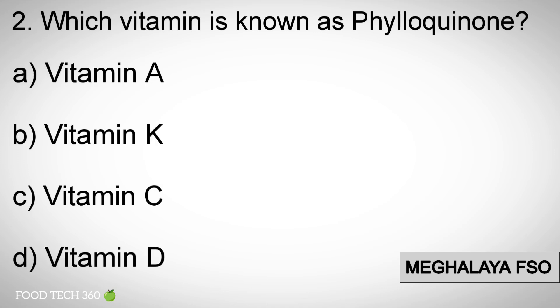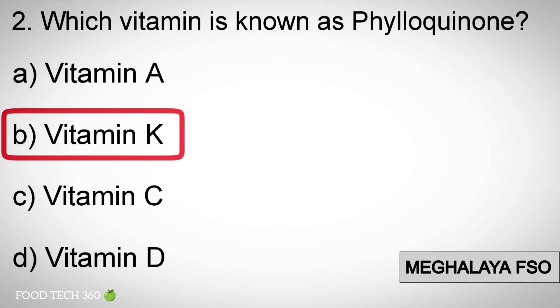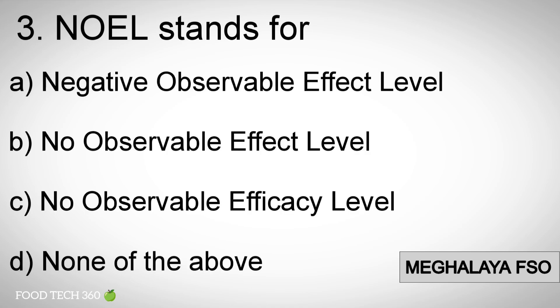Question number two: Which vitamin is known as phylloquinone? Options: A) Vitamin A, B) Vitamin K, C) Vitamin C, D) Vitamin D. Correct answer: B) Vitamin K.